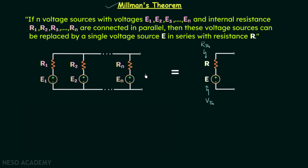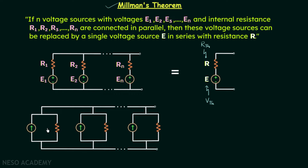Step one is to modify the branches. Each branch has one voltage source in series with one resistance. With source transformation, we can convert each to a current source in parallel with the same resistance. The current source for branch one has value E1/R1 with resistance R1, and for branch two E2/R2 with resistance R2.